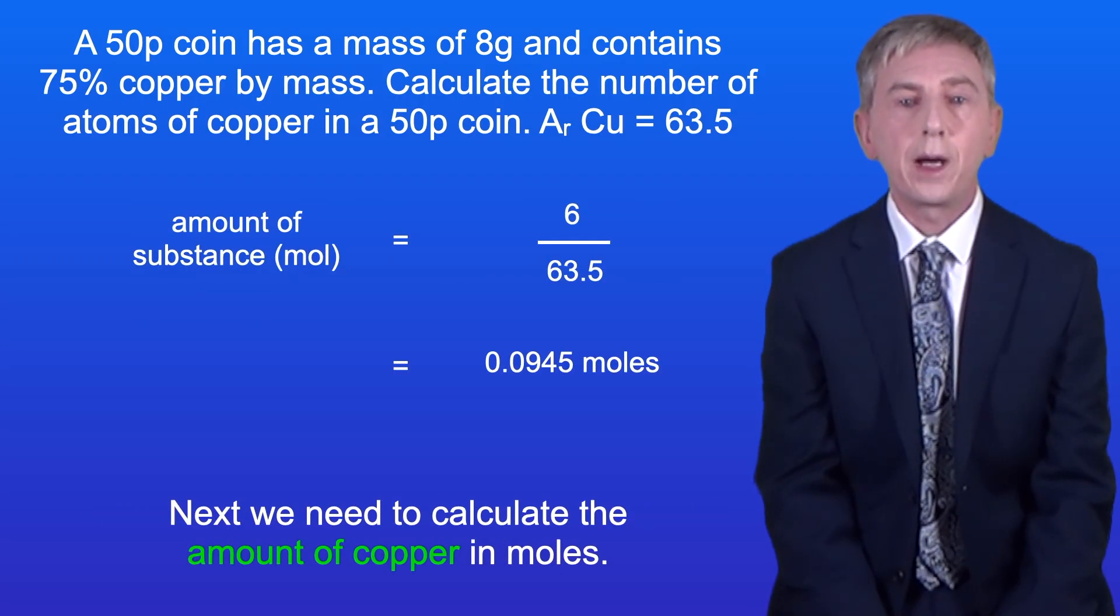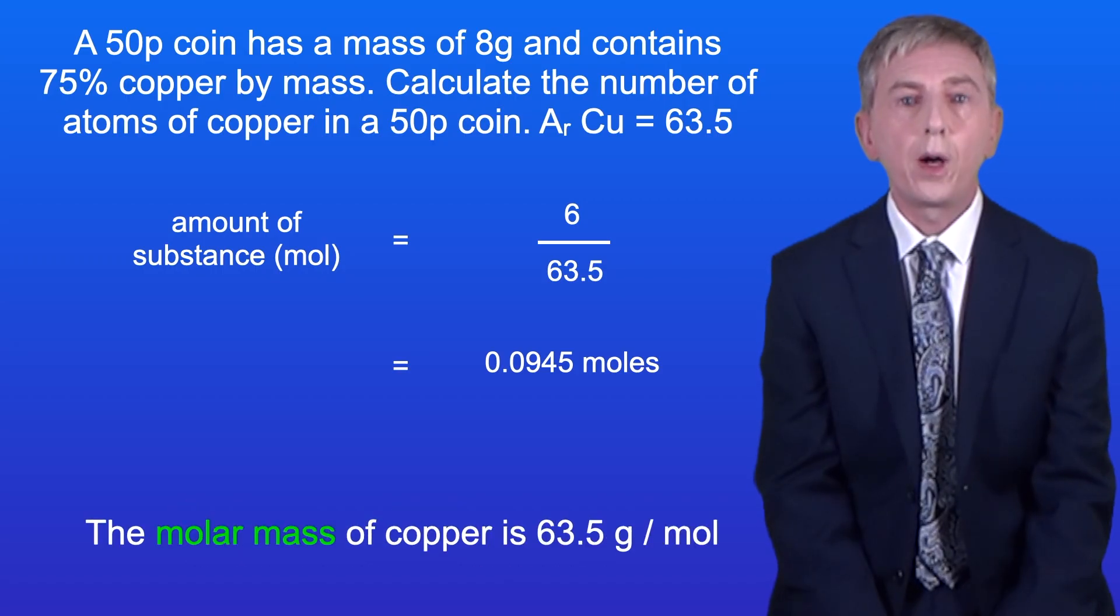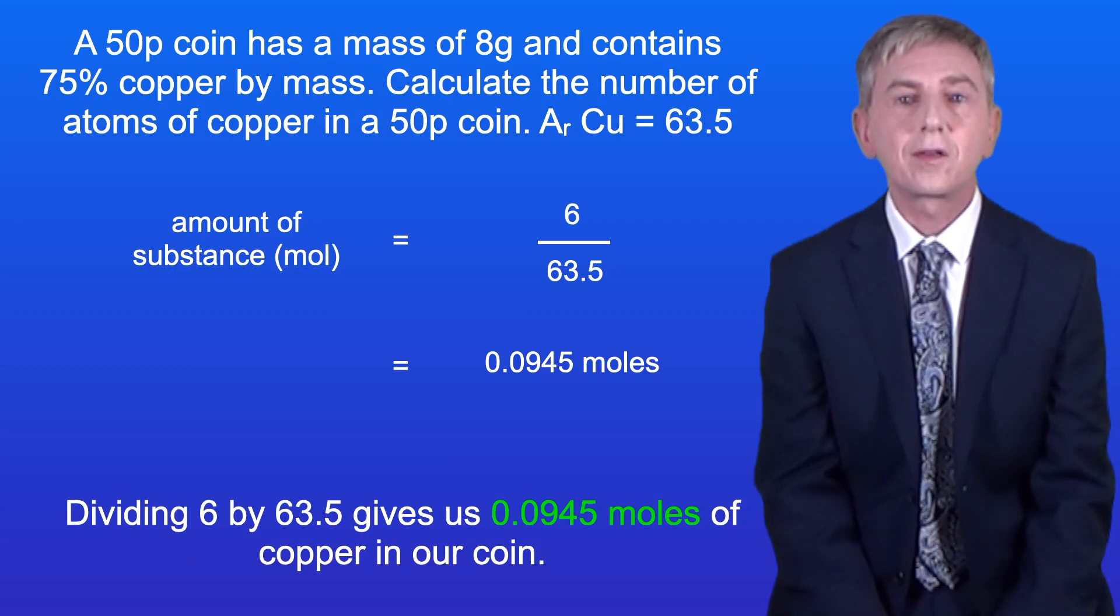Next we need to calculate the amount of copper in moles. The molar mass of copper is 63.5 grams per mole. Dividing 6 by 63.5 gives us 0.0945 moles of copper in our coin.